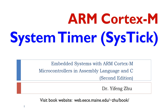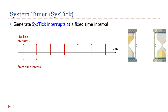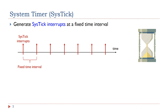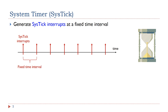This short video will explain how the system timer works. The system timer, also called SysTick, is used to generate SysTick interrupts at a fixed time interval.